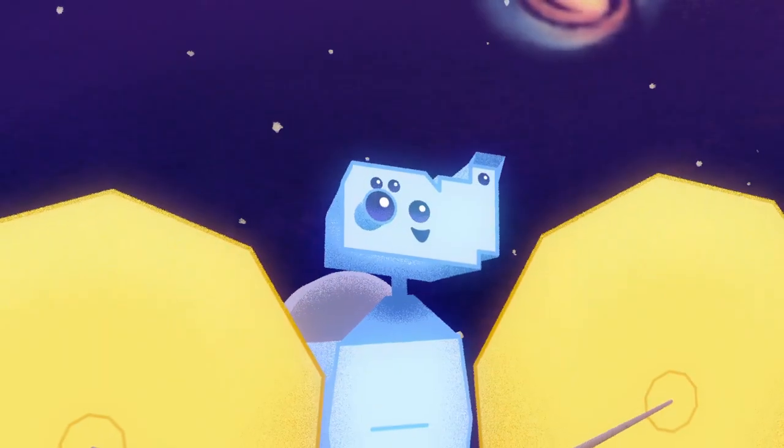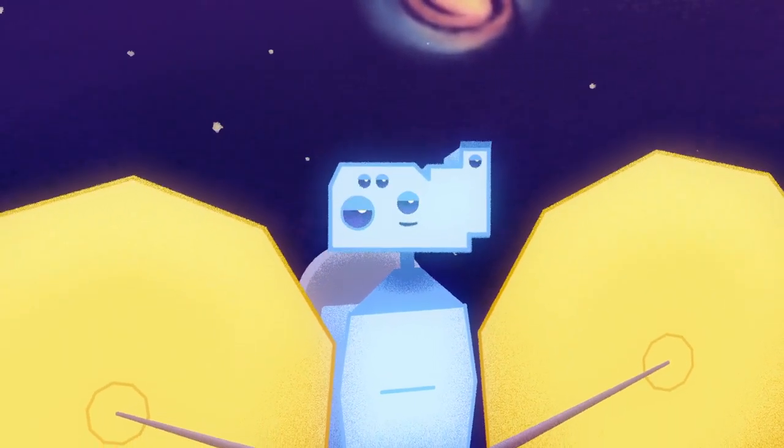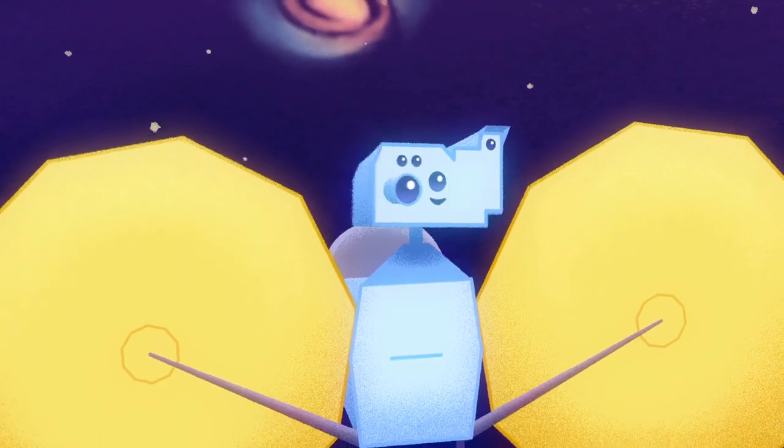We also get velocity information because the spacecraft is moving away from Earth as it sends signals. There's a change in the frequency of the radio signal, and that gives us information about velocity.